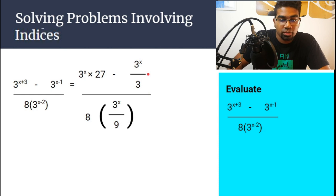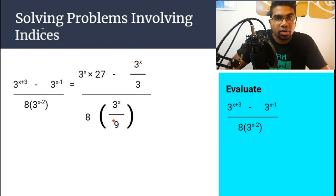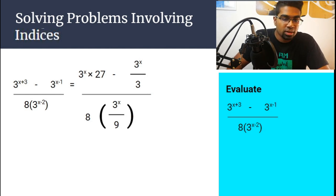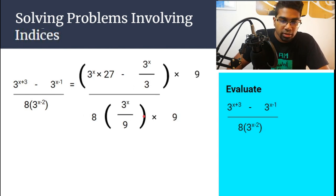In order to remove the fraction, both numerator and denominator can be multiplied by 9. Whatever multiplication or division you do to the numerator, as long as you do to the denominator, you don't change the value of the fraction. So here, multiply the whole thing by 9.